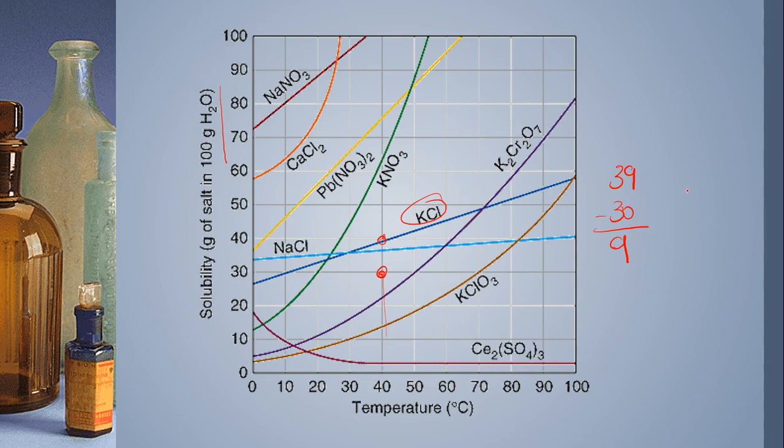If I told you that you had 30 grams dissolved in 40 degrees Celsius water, how much more could you add to make it saturated? You would just simply find the difference. If you told me that it would take 39 but you're at 30, well, then that's the difference of 9. You would need to add 9 more grams.